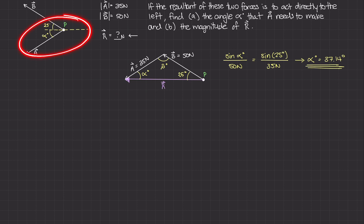In other words, the angle that A needs to make with the horizontal to ensure that the resultant force vector is exactly horizontal and pointing to the left — that angle has to be about 37.14 degrees. Awesome, we figured out part A. Let's go ahead and figure out part B.